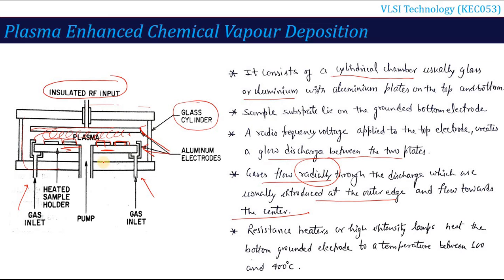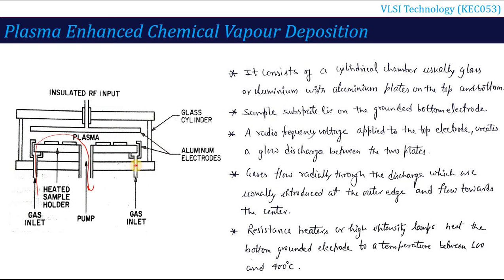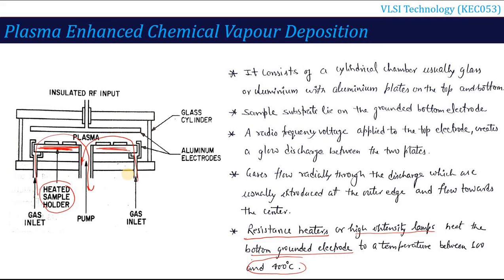After the reaction in the plasma discharge, a thin layer forms on the wafer. At the center there is a pump so that the inlet gases are pumped out from the center point. There is also a heated sample holder to raise the temperature of the substrate. Resistance heaters or high intensity lamps heat the bottom grounded electrode to a temperature between 100 and 400 degrees Celsius. This technique is called plasma enhanced CVD.